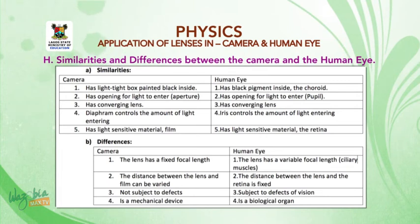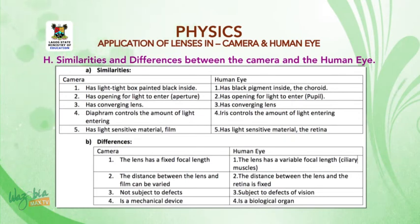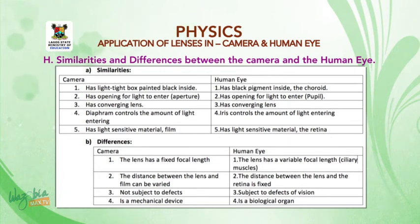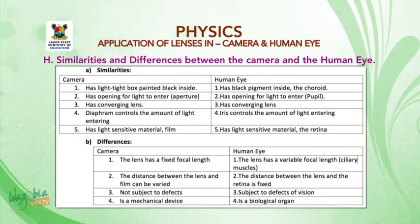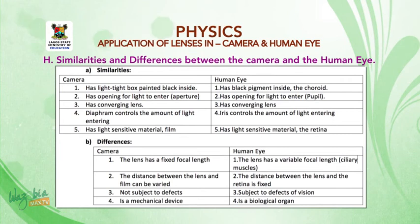Differences: 1. The lens of a camera has a fixed focal length, while the human eye has a variable focal length controlled by the ciliary muscle. 2. The distance between the lens and film of a camera can be varied, while the distance between the lens and the retina of the human eye is fixed. 3. A camera is not subjected to defects, while the human eye is subjected to defects of vision. 4. A camera is a mechanical device, while the human eye is a biological organ.